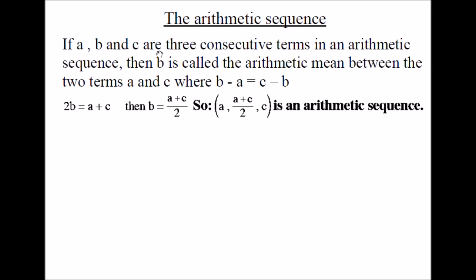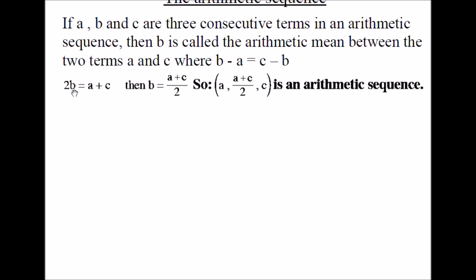If A, B, and C are three consecutive terms in an arithmetic sequence, the middle term B is called the arithmetic mean between the two terms A and C. The value of the middle term B equals the average or arithmetic mean of the two other terms A and C. So B equals A plus C over 2, and 2B equals A plus C.